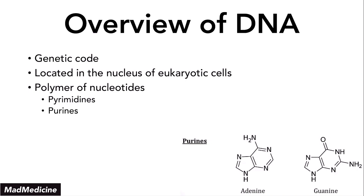These are the two classifications. In purines, you have two main nucleotides: adenine and guanine — A-G. How can you remember that? A-G is also the abbreviation for gold, and if you want to remember purine, remember 'pure.' So, also known as 'pure as gold.'